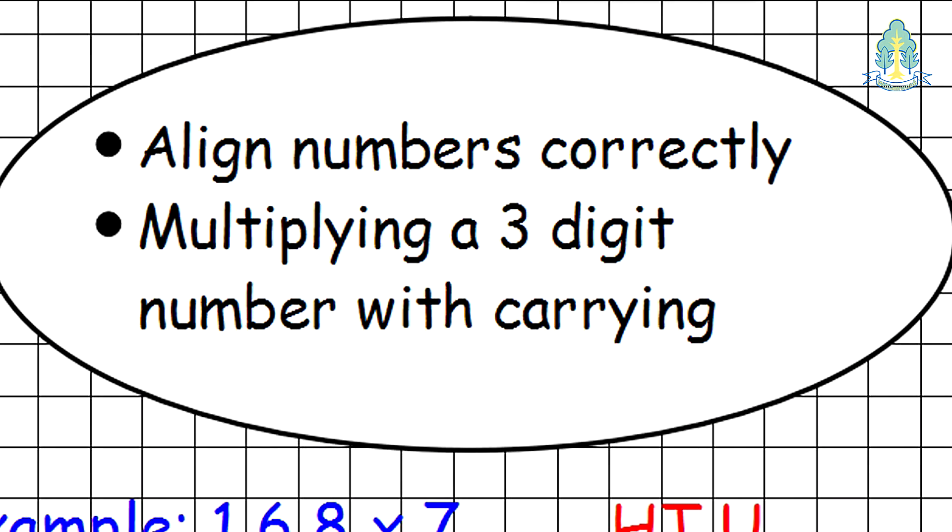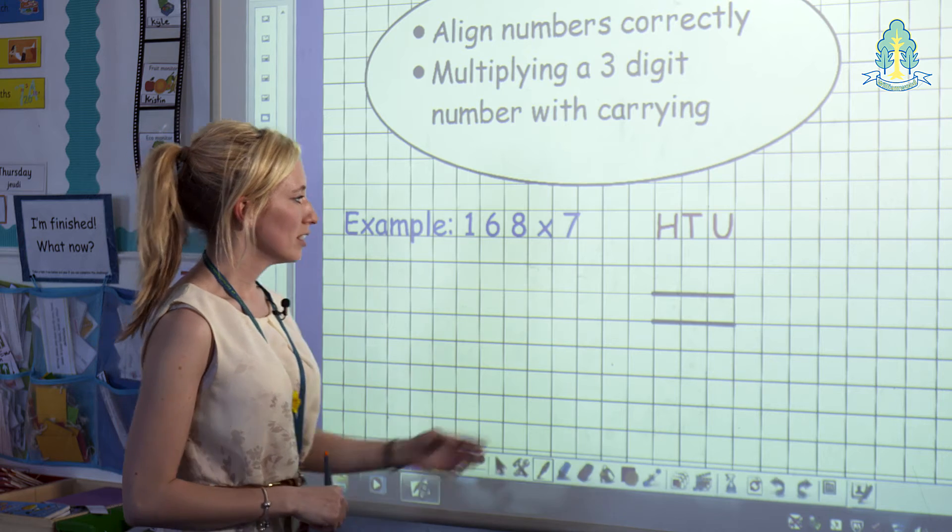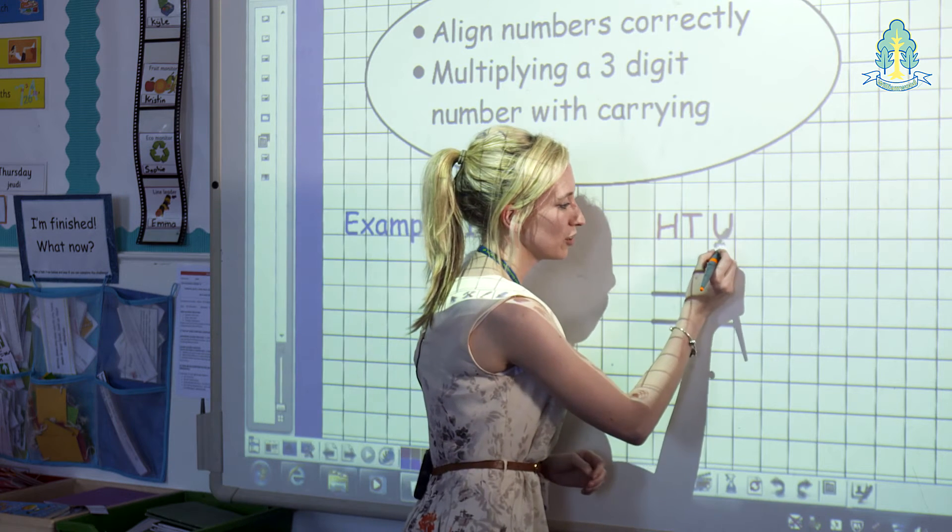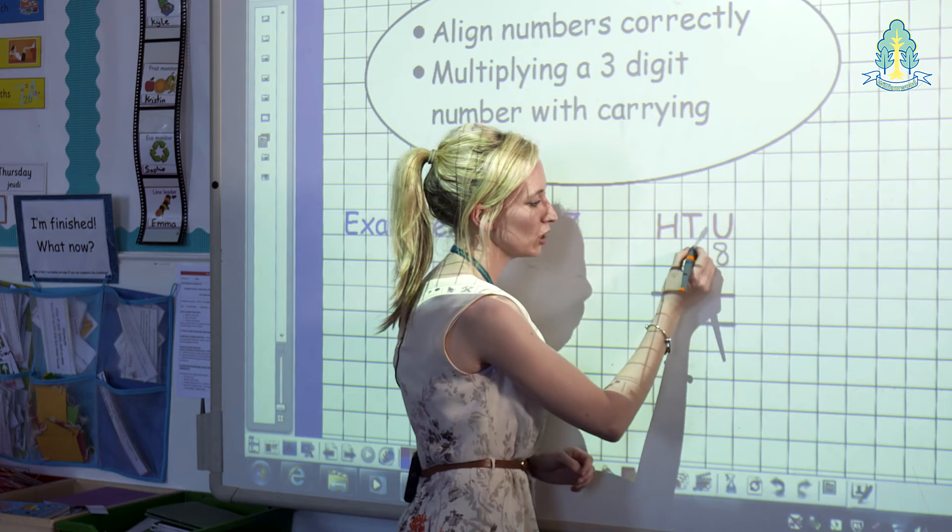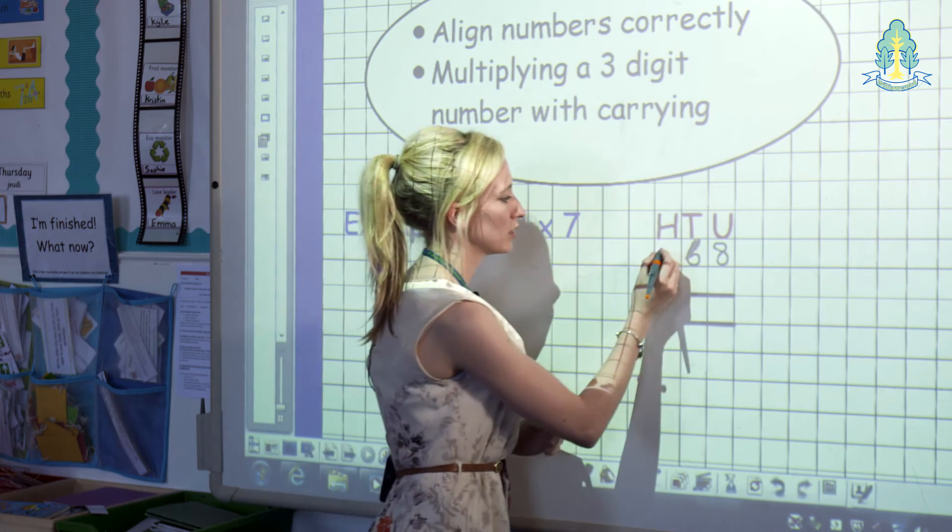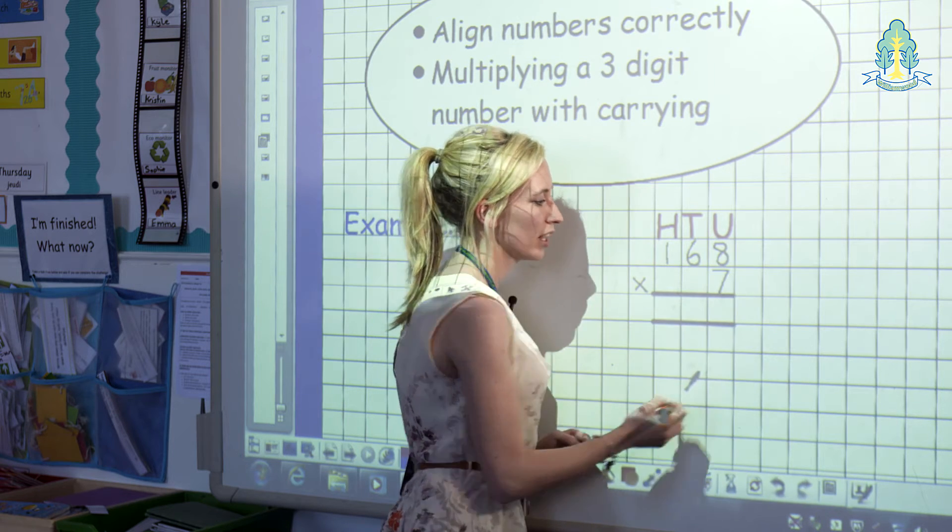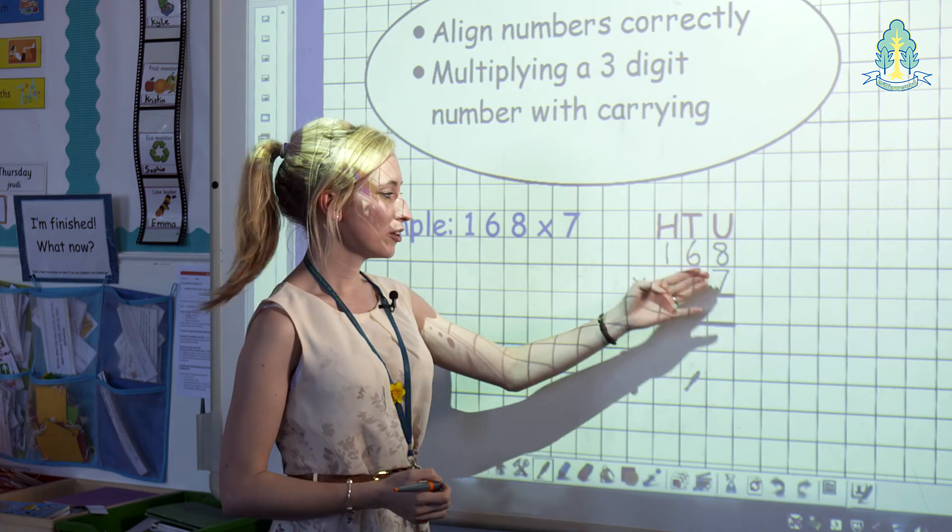The next step for children will be multiplying a three-digit number with carrying. The example here is 168 multiplied by 7. The children will know their 8 is their unit in the units column, their 6 is in their tens column, and their 1 is in their hundreds column. Multiplying this by 7, starting at the right-hand side with the units.